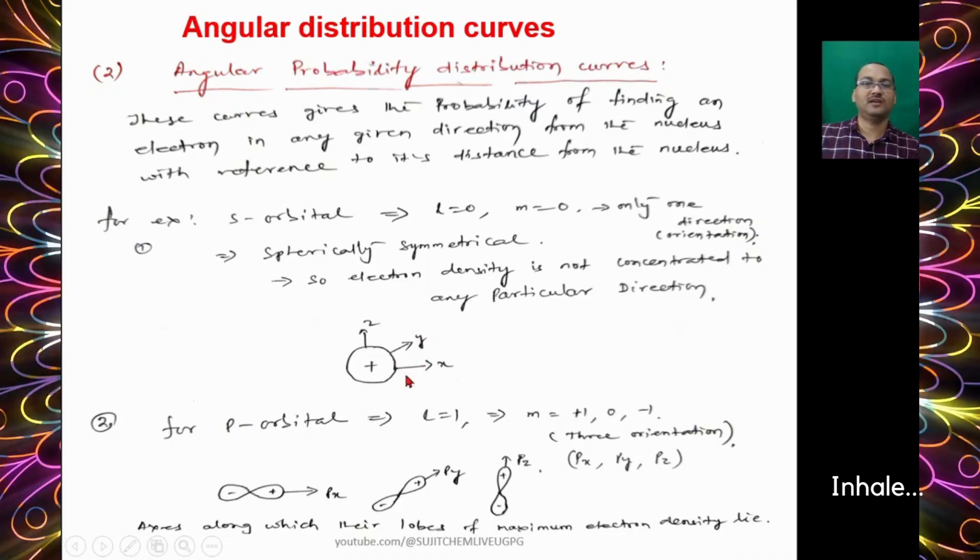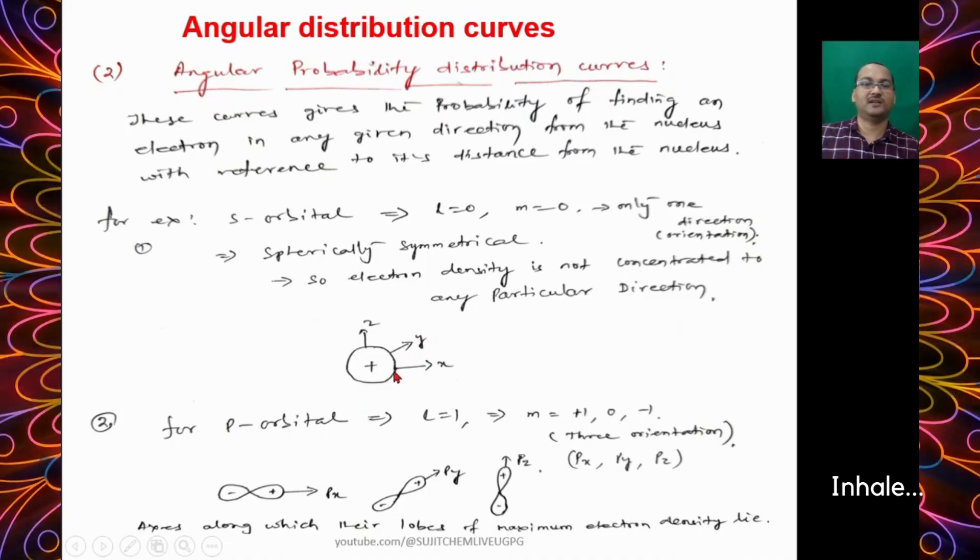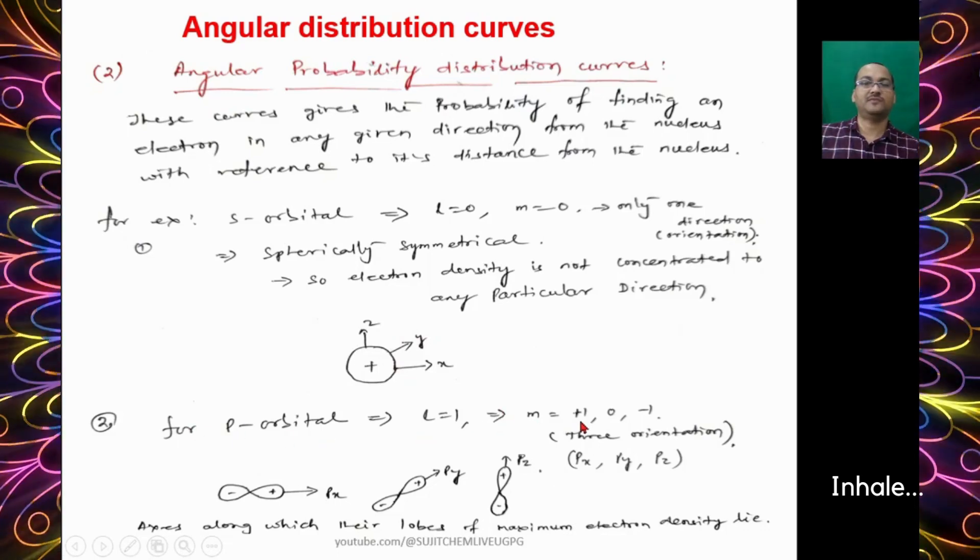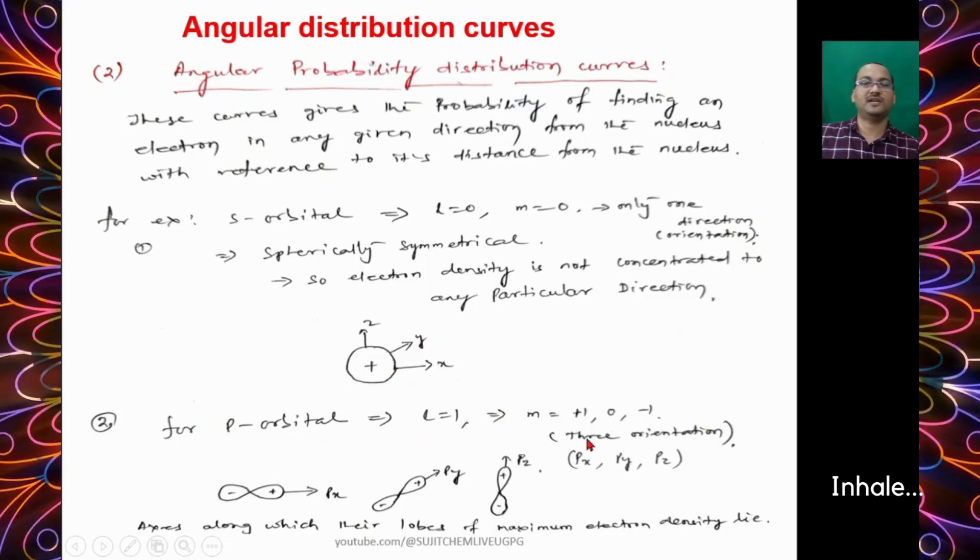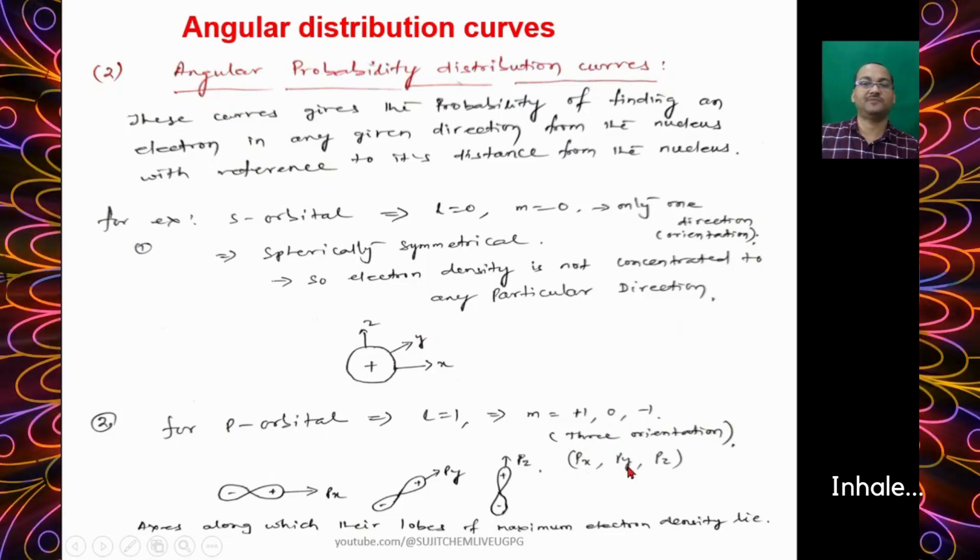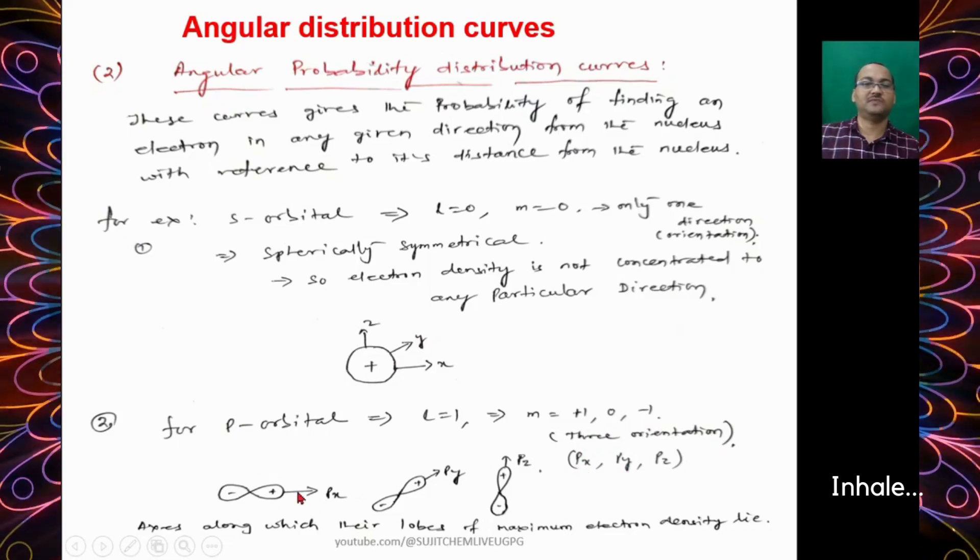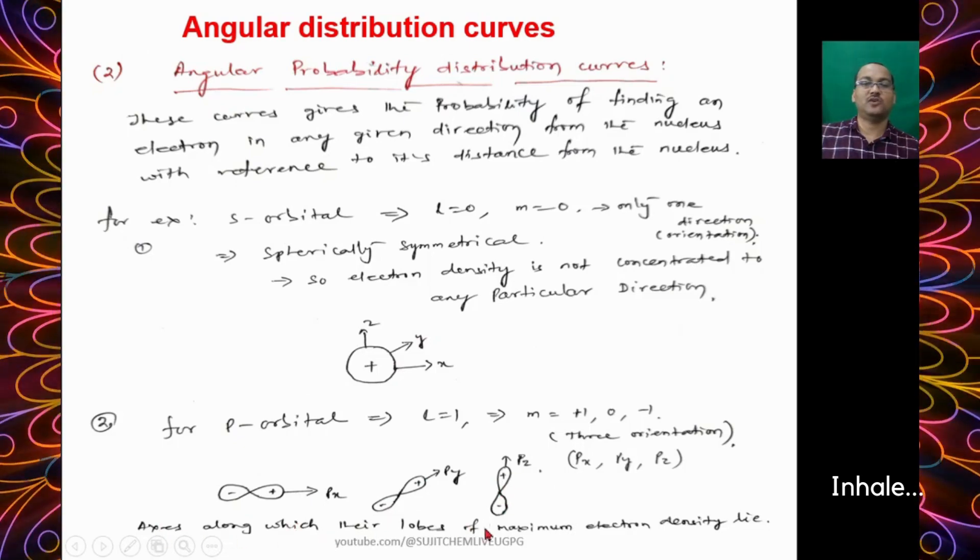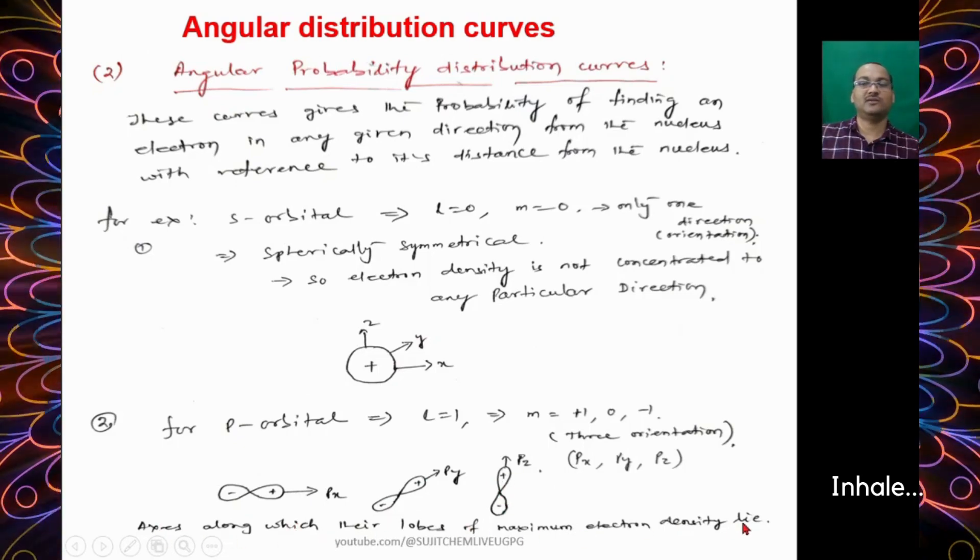That's why s orbital is spherically symmetrical. For p orbital, l = 1, so the m value is +1, 0 and -1. It has three directions, that's why we have p orbital three types: px, py and pz. The axes along which their lobes of maximum electron density lie.